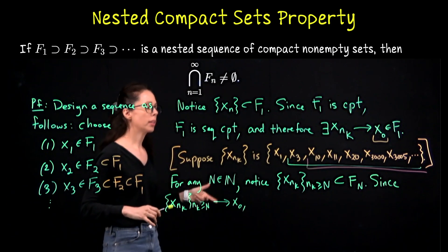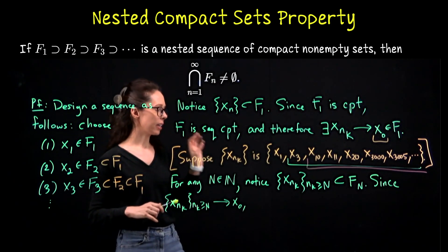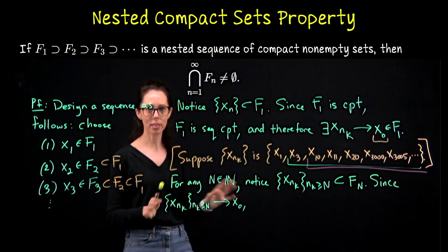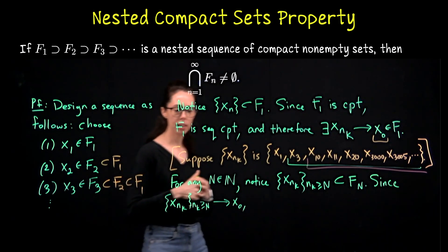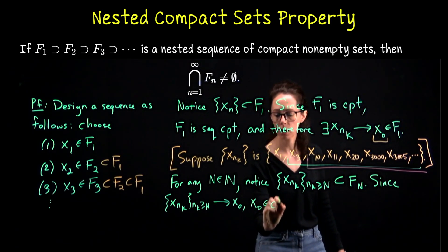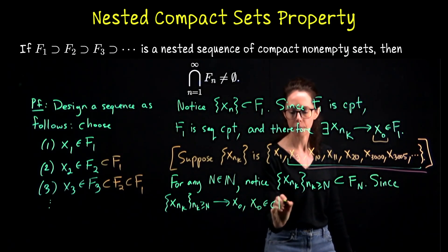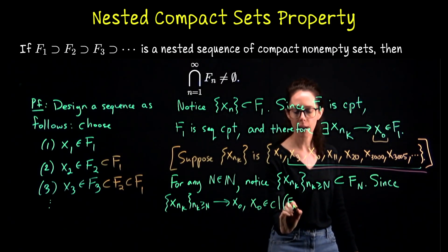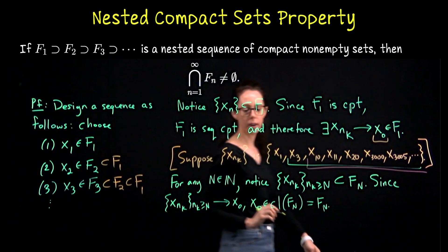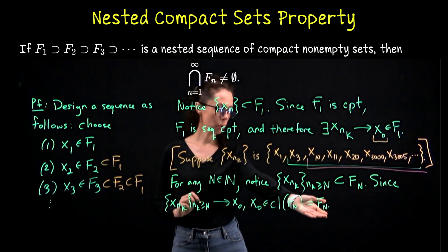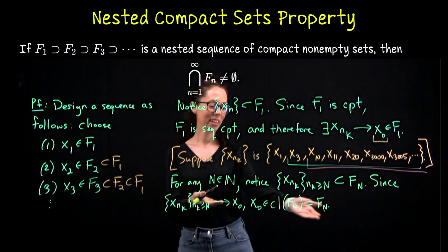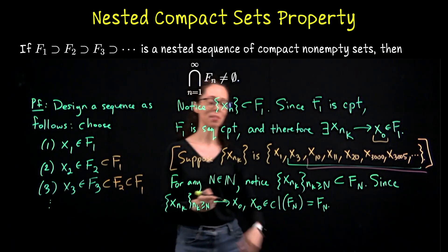There are different ways that you could now argue that this is in the compact set F_N. What I will say is that if you are the limit of a convergent sequence which lives in a closed set, you belong to the closure. That was a theorem that we've proven in the past. So this limit is an element of the closure of F_N, but that's a compact set so it's closed. Therefore, this limit belongs to F_N for all natural numbers. Therefore, this point is in the intersection. And that's it. Thus.